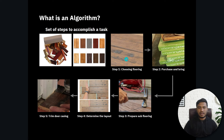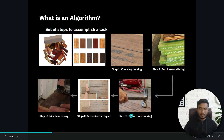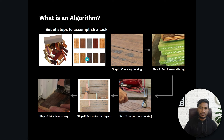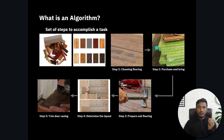Let me give you another demo. Say you want to build a floor for your home. First, you choose the color of the wood. Then you purchase and bring them. Next, you prepare the sub-flooring, determine the layout, trim the door, and complete the flooring. The wood is our data — first we structure it, then we follow a defined set of steps: choose, buy, bring, prepare sub-flooring, determine layout, trim the door, complete the floor. That sequence of steps is called an algorithm.